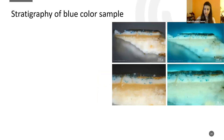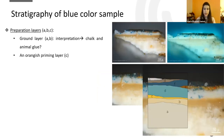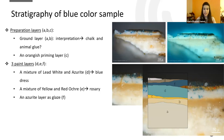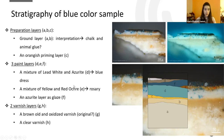In the blue sample, we can see first the preparation layer — a thick layer consisting of the ground layer and an orange priming layer. In this sample we can see three paint layers: a mixture of lead white and azurite (the thick white layer with blue particles, corresponding to the blue dress); a mixture of yellow and red ochre, present only on the right side of the sample, possibly corresponding to the rosary; and on top, an azurite glaze layer. On top of all, we found two varnish layers: one very brown, old, and oxidized, which may be the original varnish, and one clear varnish.